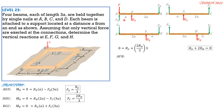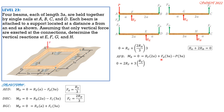Proceeding to beam AFB: setting moment at B equal to zero, clockwise positive: R_F times 2A plus F_A times 3A minus P times 3A equals zero. Canceling A and replacing F_A with R_E/3 gives: 2R_F plus R_E equals 3P. This is also an important relationship for the reactions.